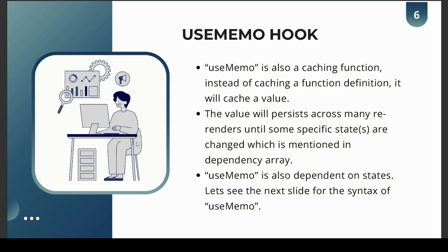Now let's look at the useMemo hook. useMemo is also a caching function, but instead of caching a function definition, it caches the value returned by the function. The value will persist across many re-renders until specific states mentioned in the dependency array are changed. So unlike useCallback, useMemo caches the function's returned value rather than the function definition itself.